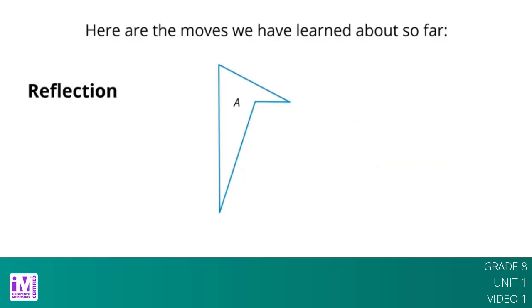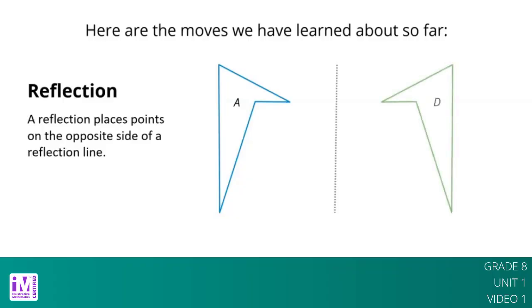Reflection. A reflection places points on the opposite side of a reflection line. Every point of the figure is reflected to a point directly opposite to it on the other side of the line, and the same distance from the line. The reflection line shows where the mirror should stand. Here, figure A is reflected across the dotted line. Figure D is a reflection of figure A.